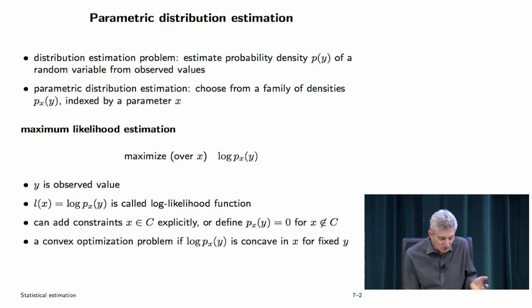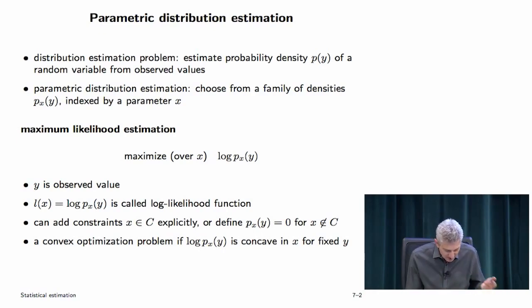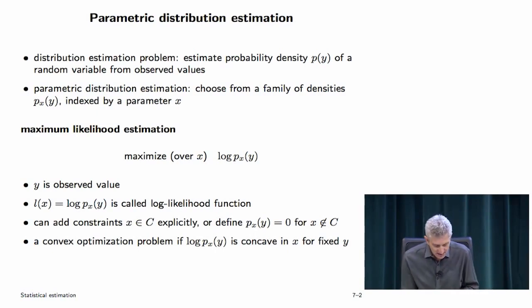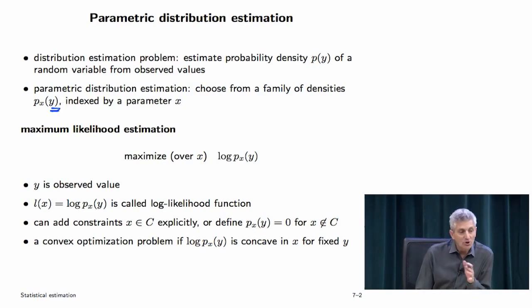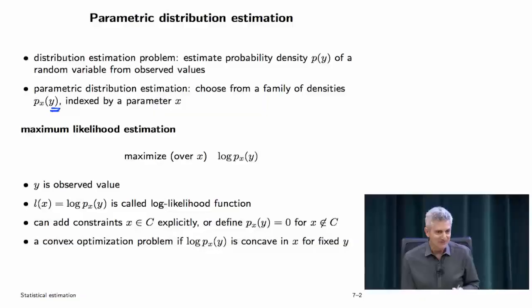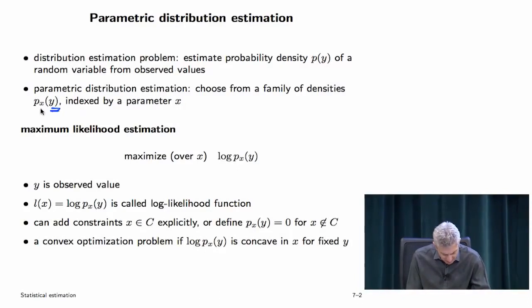This is at the absolute core of statistics. We won't look at the non-parametric case; we'll look at the parametric case. In the parametric case, you have observed the outcome of a random variable, but you don't know which distribution it came from. You have a parametrized set of distributions — this is the basic starting point in classical, frequentist statistics. The parameter we'll call x.